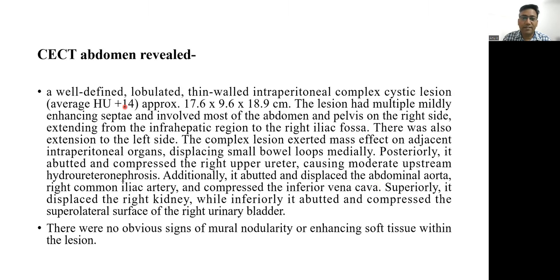The CECT abdomen revealed a well-defined lobulated thin-walled intraperitoneal complex cystic lesion with an average Hounsfield unit of +14. The lesion had multiple mildly enhancing septa and involved most of the abdomen and pelvis on the right side, extending from the infrahepatic region to the right iliac fossa, with extension to the left side. The lesion exerted mass effect on adjacent intraperitoneal organs displacing small bowel loops medially, abutted and compressed the right upper ureter causing moderate upstream hydronephrosis, displaced the abdominal aorta and right common iliac artery, compressed the inferior vena cava, displaced the right kidney superiorly, and abutted and compressed the superior lateral surface of the urinary bladder inferiorly. There were no obvious signs of mural nodularity or enhancing soft tissue within the lesion.